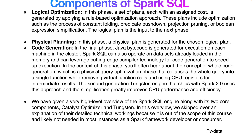After logical planning, the third phase is Physical Planning, in which a physical plan is generated from the chosen logical plan. The fourth and final phase is Code Generation, where Java bytecode is generated for execution on each machine in the cluster. Spark SQL can also operate on datasets already loaded into memory and can leverage modern compiler technology for faster code generation and execution.